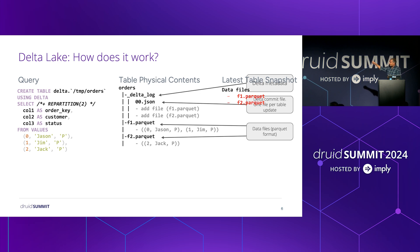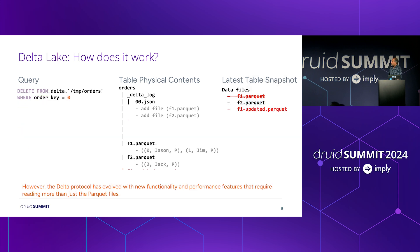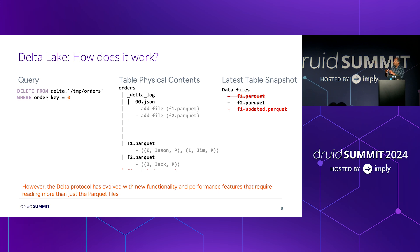You write a new data file, and the transaction log — the 1.json — tells you that the old f1.parquet was removed and a new data file is being added. This reliably expresses the delta compared to your existing state. The reader goes to the transaction log: reading 0.json it knows it needs two files, then reading 1.json it knows that f1 is deleted — cross it out — and it needs to read the new file called f1 slash updated. All the reader has to do is go through the transaction log, figure out the Parquet files, and most engines have a Parquet reader to read the data.